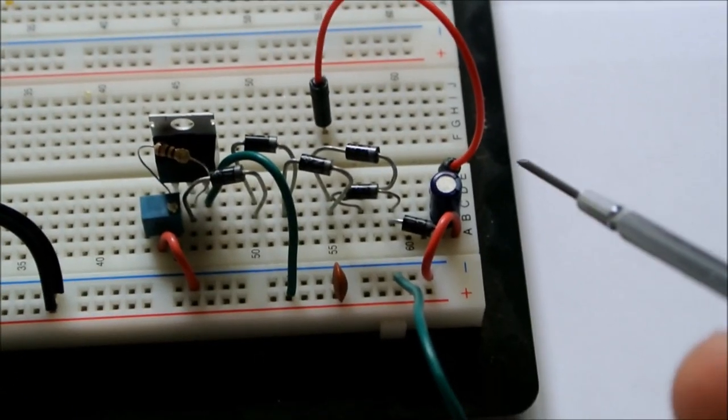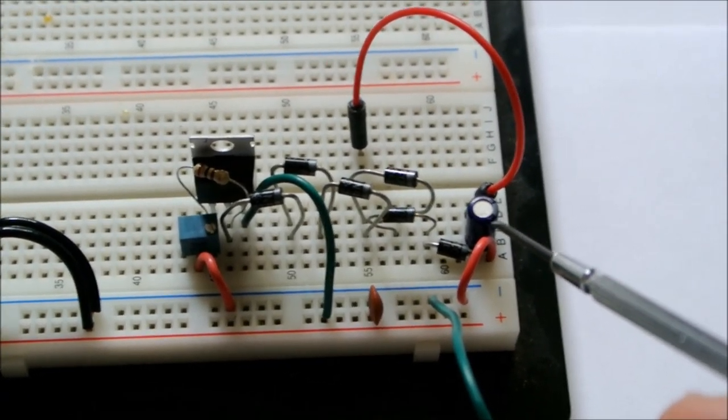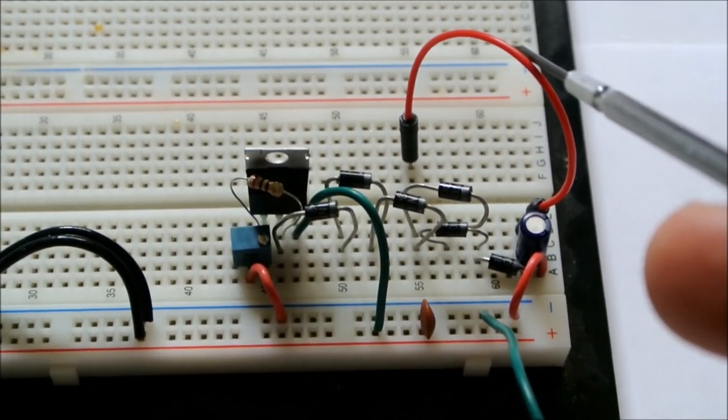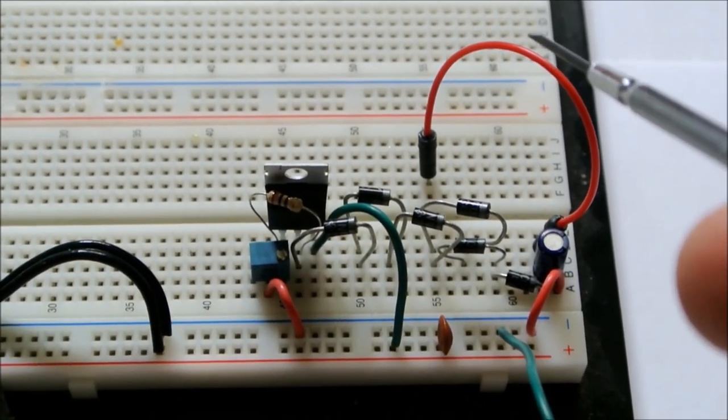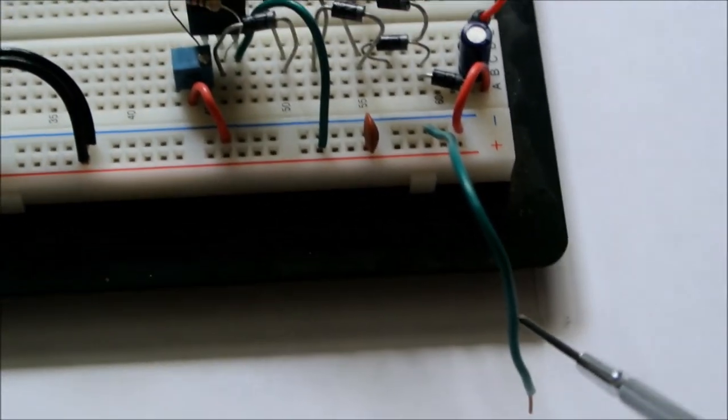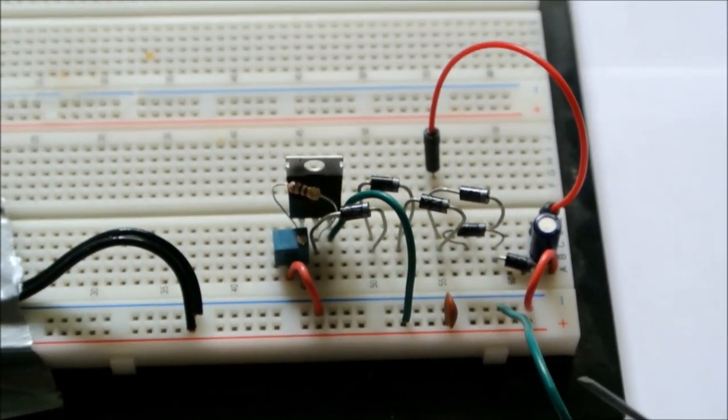I have this one microfarad 50 volt capacitor just for smoothing the output, and then this red wire goes to the anode, and this green wire, the ground, goes to the cathode where tin metal is deposited as crystals.